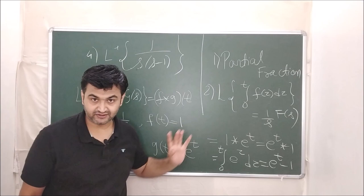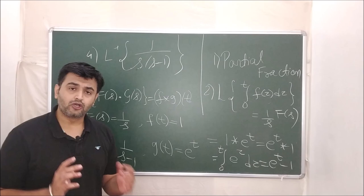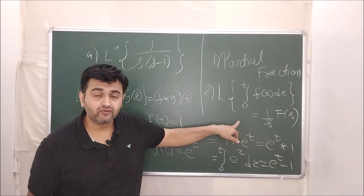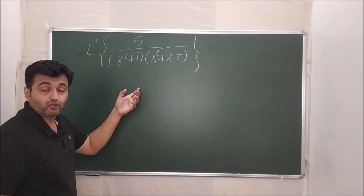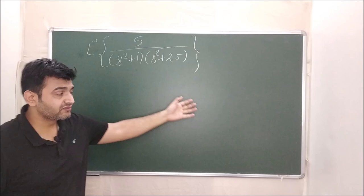You should get the same answer using partial fractions or the integration technique — convolution is just a third method. Whenever you see a product in the denominator, prefer partial fractions or convolution. If only 1/s or 1/s² appears, you can also use the Laplace of integration technique. Now let's take one more example: find L⁻¹{5/[(s²+1)(s²+25)]}.